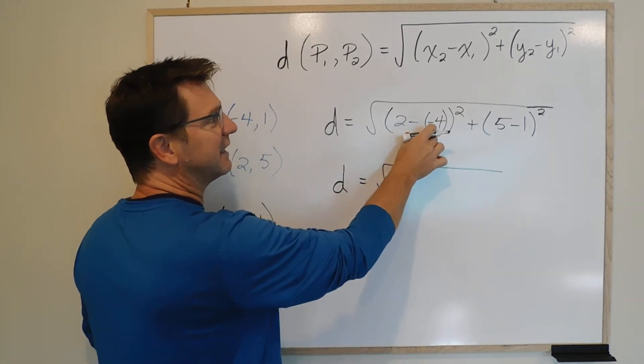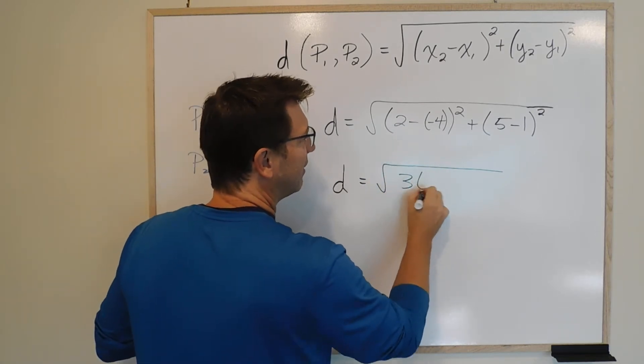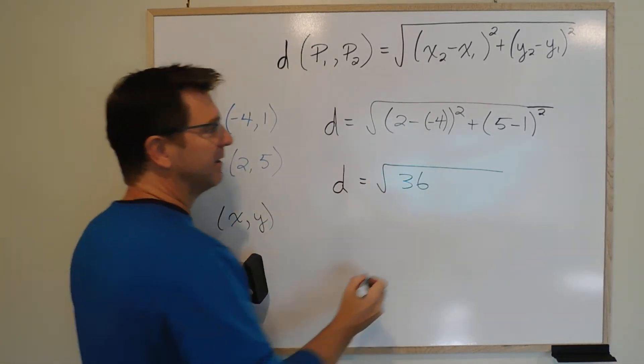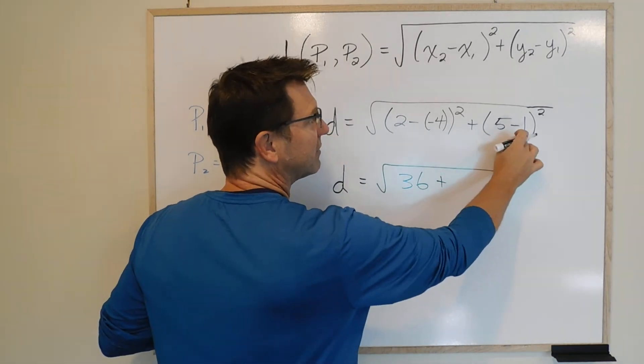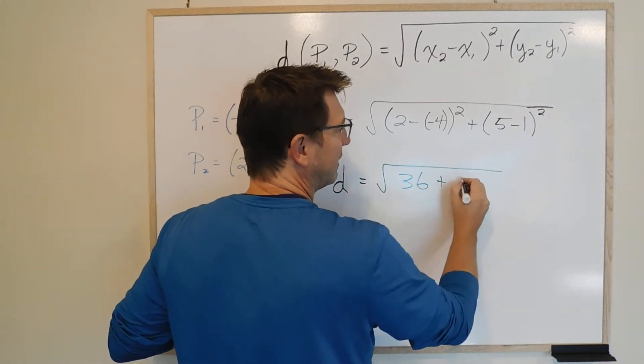Well, 2 minus negative 4 is 6, 6 squared is 36. And 5 minus 1 is 4, and 4 squared is 16.